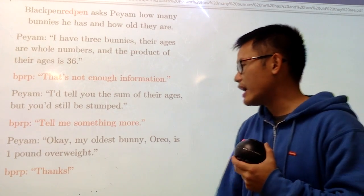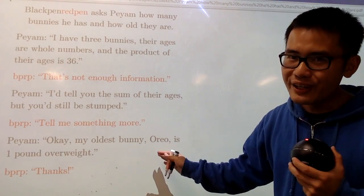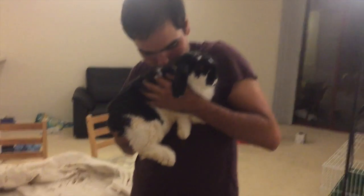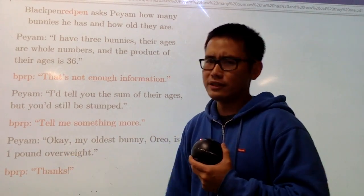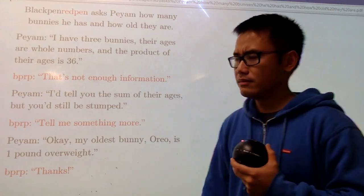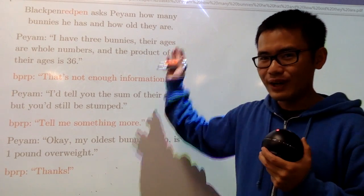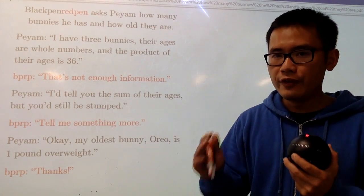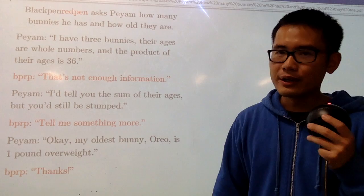Finally, he says, okay, his oldest bunny, Oreo, is one pound overweight. And in fact, based on all this, I am able to figure out their ages. How can I do that? Be sure you pause the video and give this a try first.